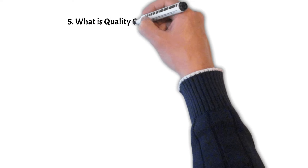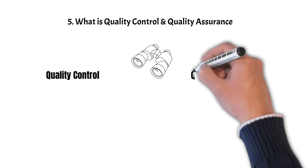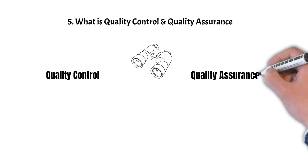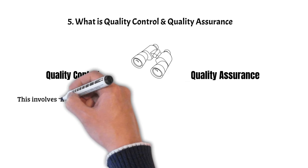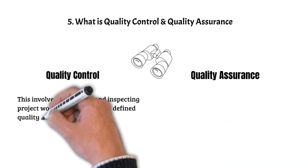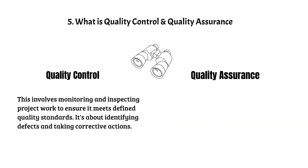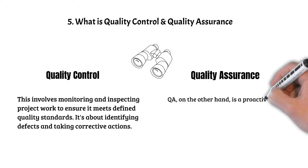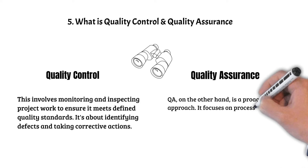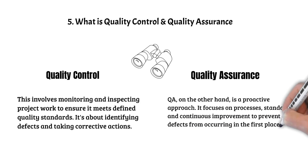Fifth, what is quality control and quality assurance? Speaking about project quality, it is important to understand and include both within the project. Quality control involves monitoring and inspecting project work to ensure it meets defined quality standards — it's about identifying defects and taking corrective actions. Quality assurance, on the other hand, is a proactive approach that focuses on processes, standards, and continuous improvement to prevent defects from occurring in the first place.